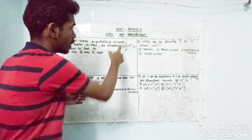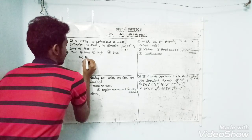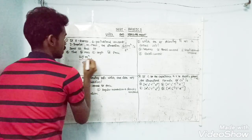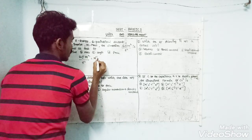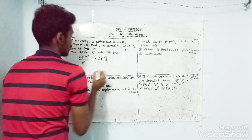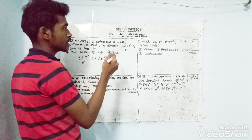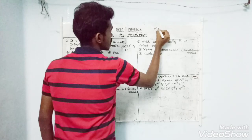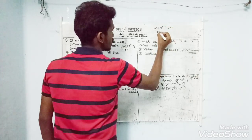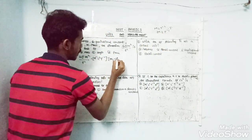The dimension of G is M⁻¹·L³·T⁻². This is the gravitational constant. For the energy E squared in the denominator, we note its dimensions. For impulse I: impulse equals force times time, so M·L·T⁻² multiplied by T, giving M·L·T⁻¹. So the dimension of impulse is M·L·T⁻¹.